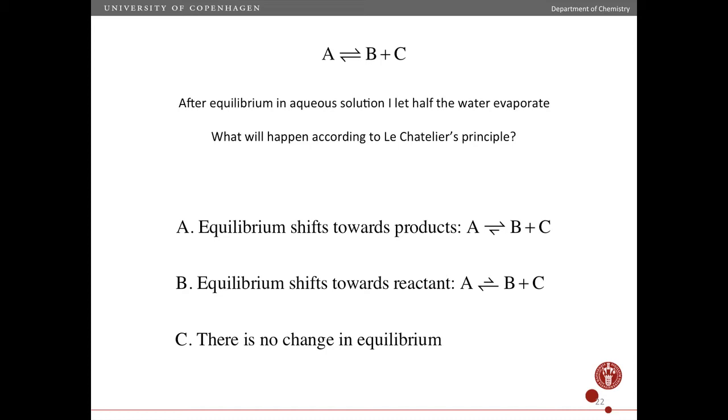So press the pause button, think about it, and when you're ready, when you think you have the right answer, press play again. Ready? Okay, so the answer is B. The shift of the equilibrium is towards reactants. So why is that?